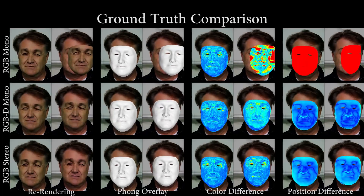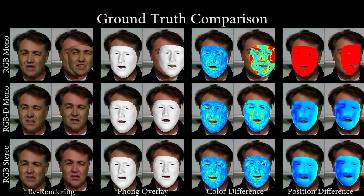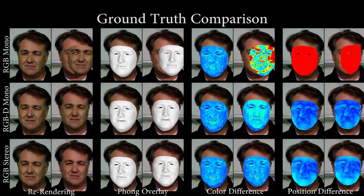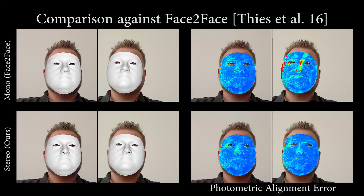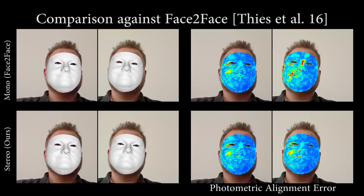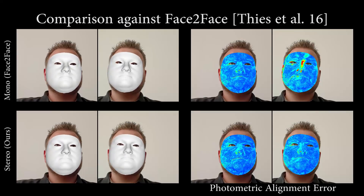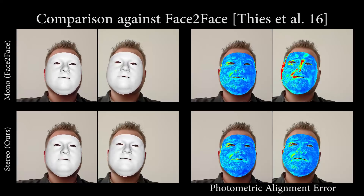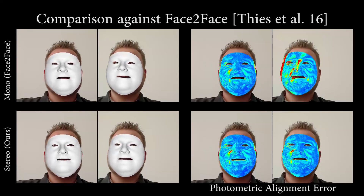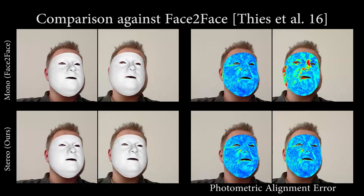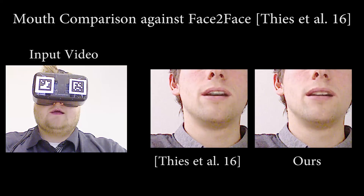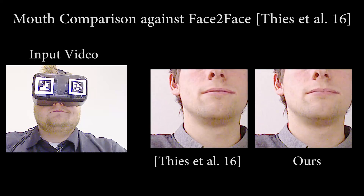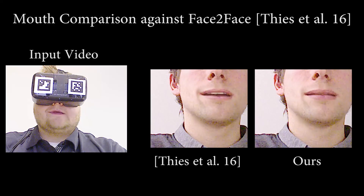We evaluate our novel stereoscopic face tracking approach using a high-quality stereo reconstruction as reference. Here we show a direct comparison to face-to-face based on our stereo camera setup. We achieve consistently lower photometric error in both views, which is essential for tracking and re-enacting VR content. In contrast to face-to-face, which does not track and transfer eye motion, we also improve the re-rendering of the mouth interior using a saliency-based image deformation technique. This leads to more temporally coherent results, as shown on the right.